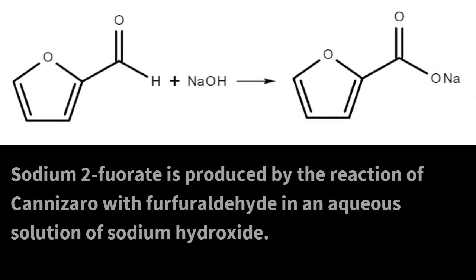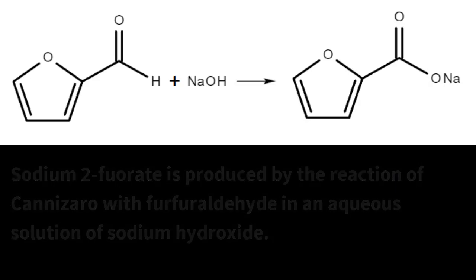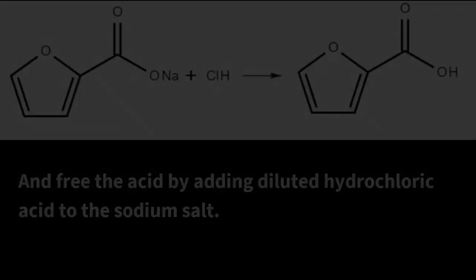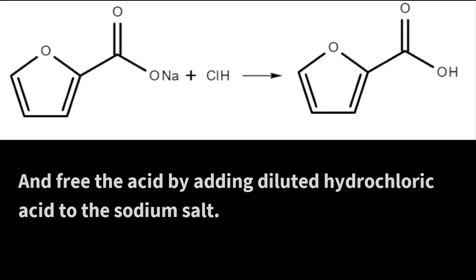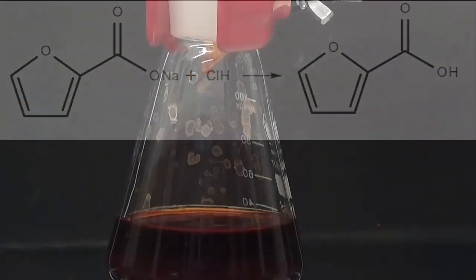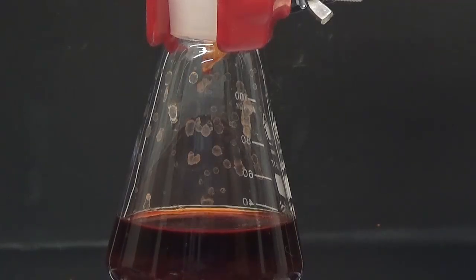Sodium 2-furoate is produced by the Cannizzaro reaction with furfural in an aqueous solution of sodium hydroxide and free the acid by adding diluted hydrochloric acid to the sodium salt. The result of this reaction is 2-furoic acid and furfuryl alcohol.